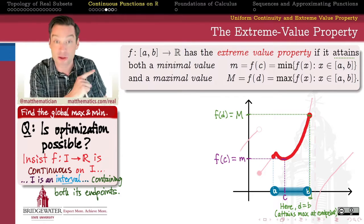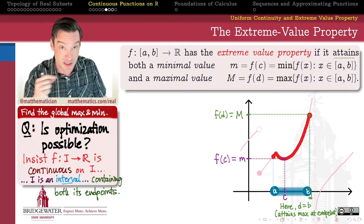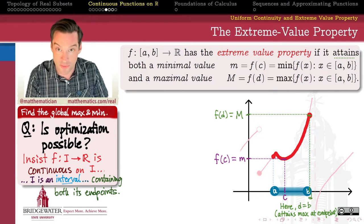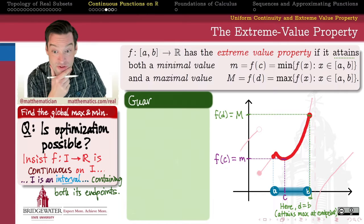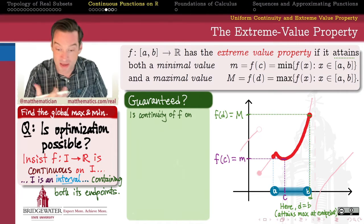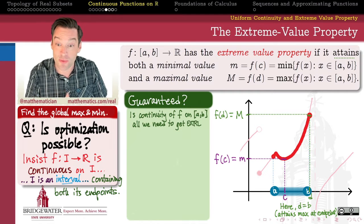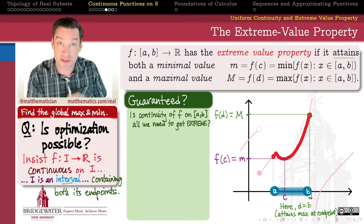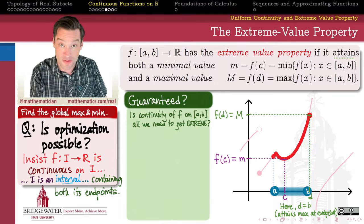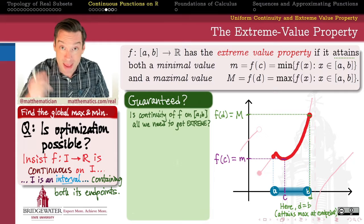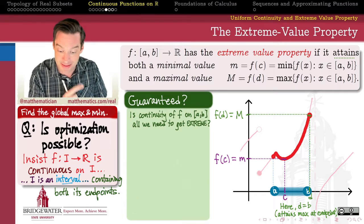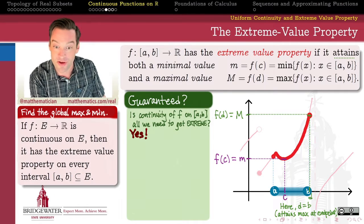So f has the extreme value property if a maximum and minimum value for the function exist and also those values are attained as values of the function for input values that belong to the domain. The big question is: do we have a sufficient set of criteria for this extreme value property to hold? Is it true that every continuous function on a closed interval from a to b will have this extreme value property? And fortunately, the answer is yes.